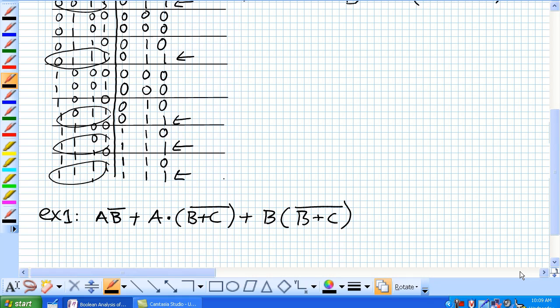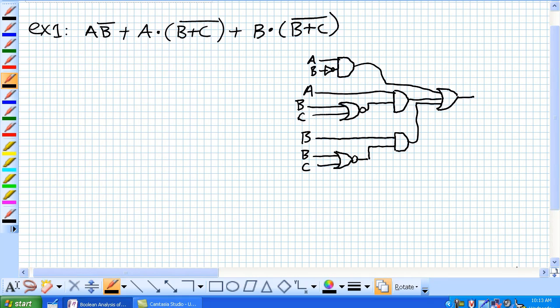And there we go, got A and not B or A and not B or C or B and not B or C. What does this look like in a circuit? Well, in a word ugly,